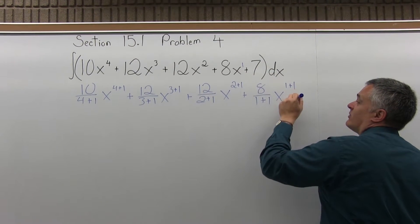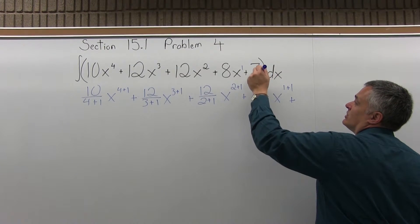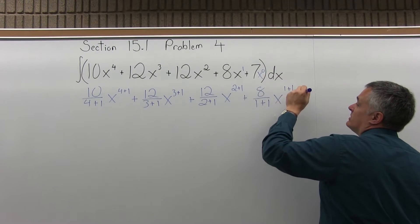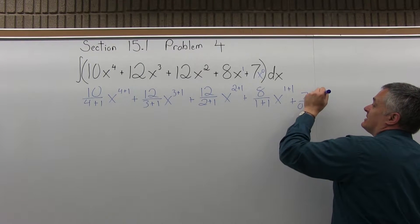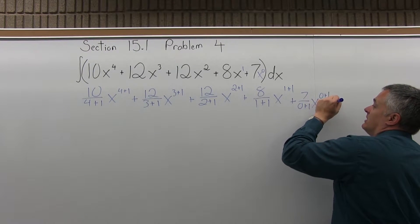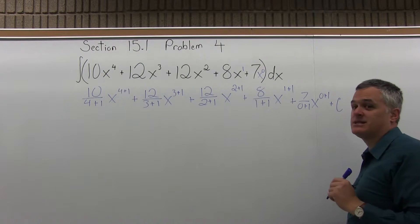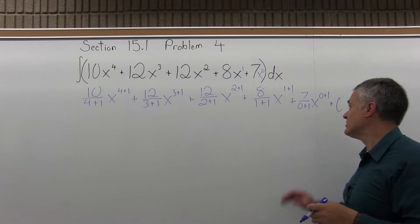The 7 came from a 7x. I mean, you can assume it's a 7x to the 0. So it would be 7 over 0 plus 1, x to the 0 plus 1, plus some type of constant, some number that had no x, no variable with it.